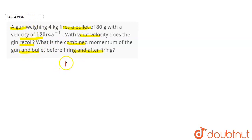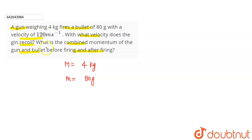The gun is capital M. The mass of the gun given is 4 kg. A bullet of 80 grams — that is the small mass of the bullet. The velocity of the bullet is 120 meters per second.